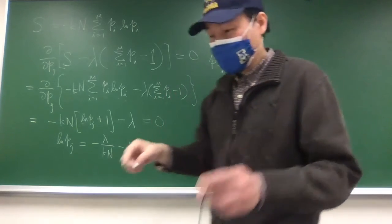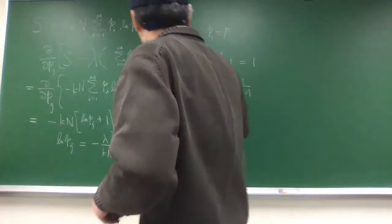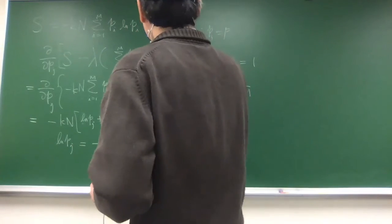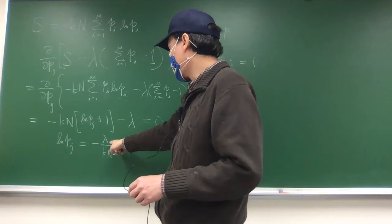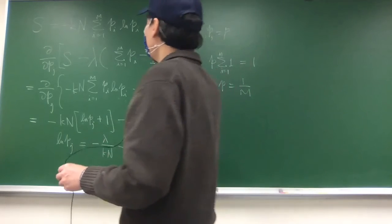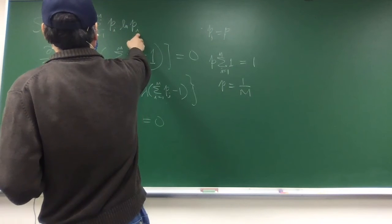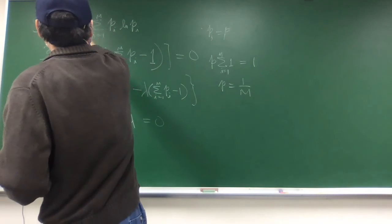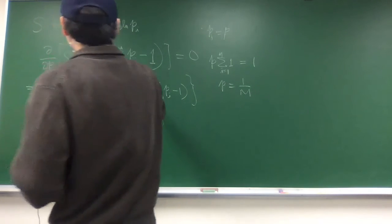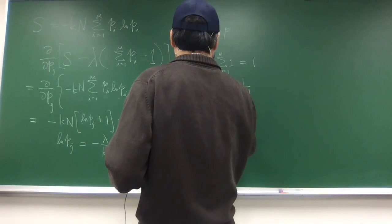So that's why I'm saying this is trivial. Once you get that, of course you can express your Lagrange multiplier in terms of this one, but this is actually not important now. Because when you figure out that all the p should be constant when you maximize the entropy subject to the constraint, then you can express your final answer.